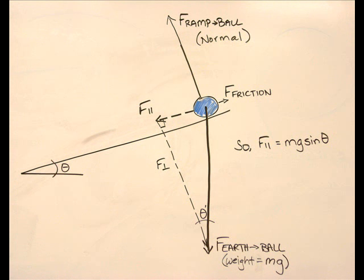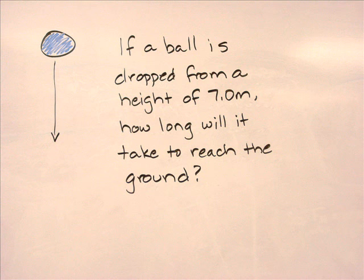Using our handy-dandy trig functions, we find that the part of the force of the Earth on the ball that's pulling down the ramp is equal to mg sine theta. So he had managed to dilute gravity by the sine of the angle. We'll get back to that in a couple of weeks.